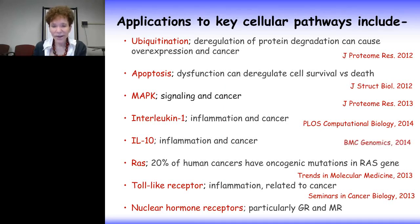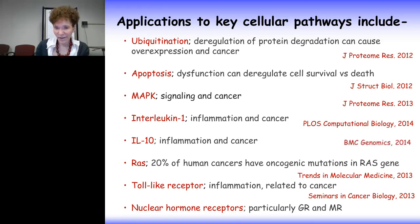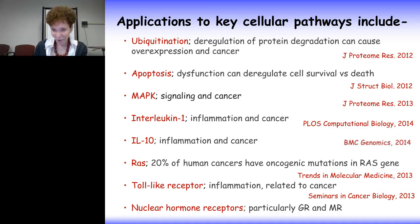This concept can be applied to the modeling of protein-protein interactions in pathways across the proteome. Applications to key cellular pathways we have carried out include ubiquitination — deregulation of protein degradation can cause overexpression and cancer — apoptosis, the MAPK pathway, interleukin-1 relating to inflammation and cancer, IL-10, the RAS protein — over 20% of human cancers have oncogenic mutations in their RAS genes — the toll-like receptor, and the nuclear hormone receptor, particularly the glucocorticoid and mineral receptors.